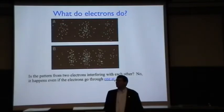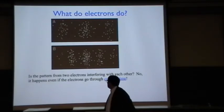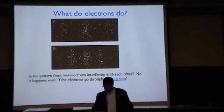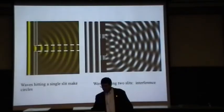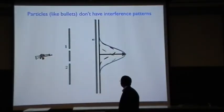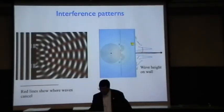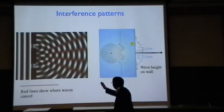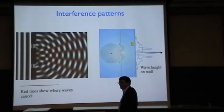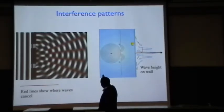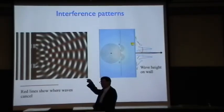Because this pattern of white and black is a wave pattern that comes when something happens with something going through both slits. So you don't get to think of the electron as just going through one of the slits. The wave function went through both.